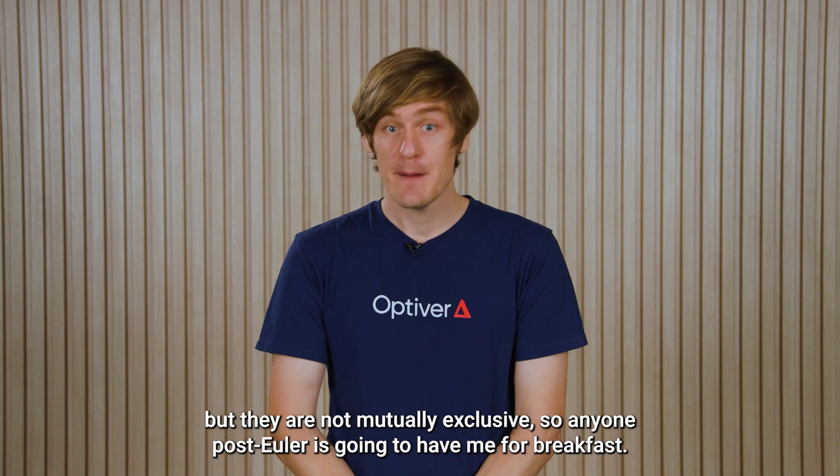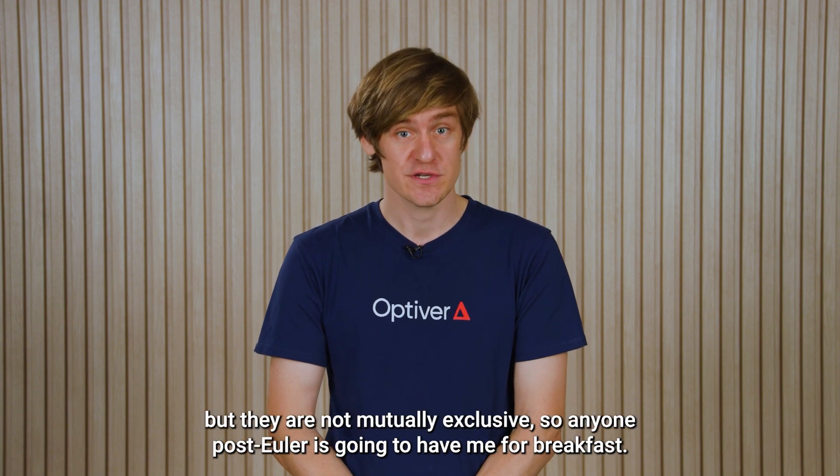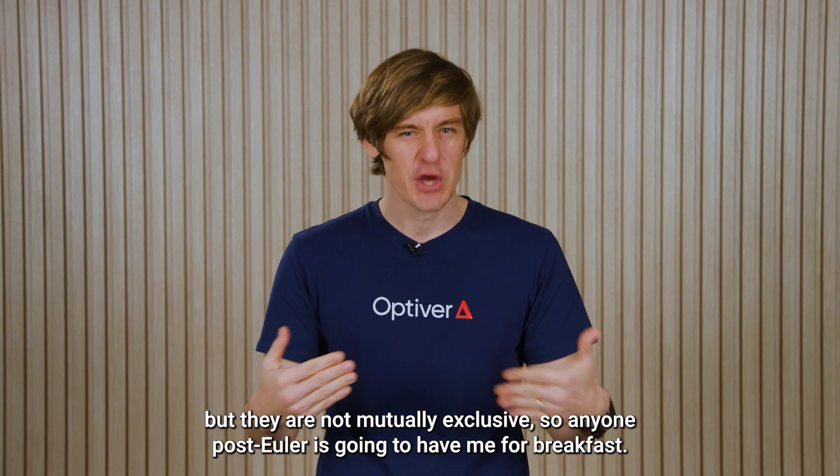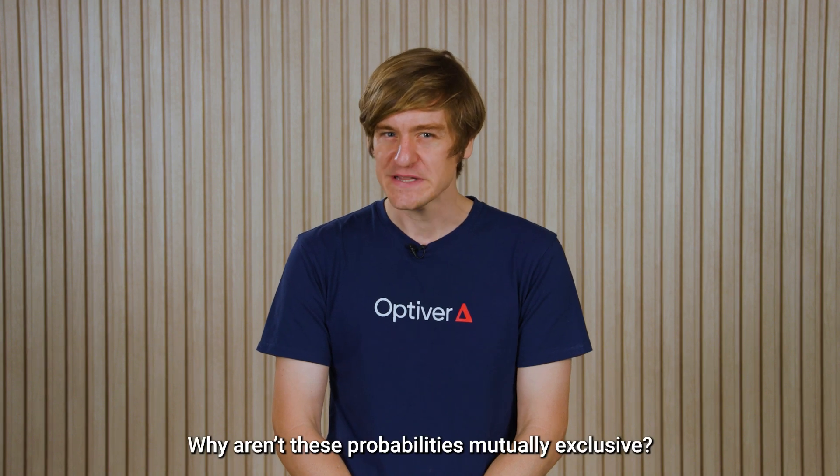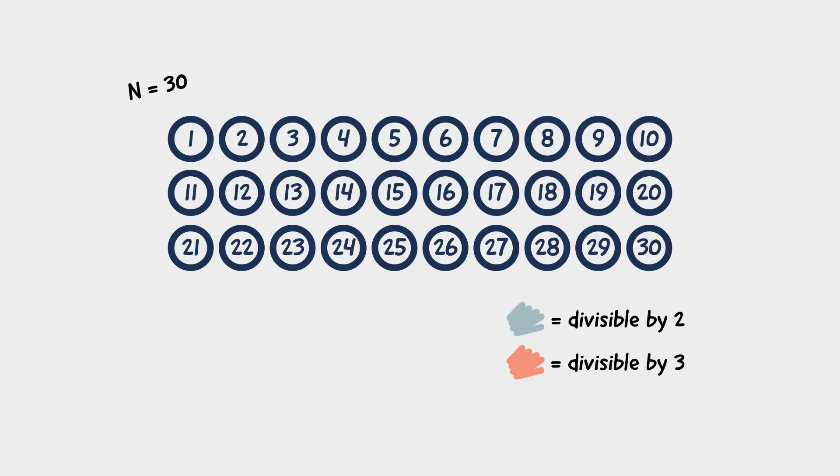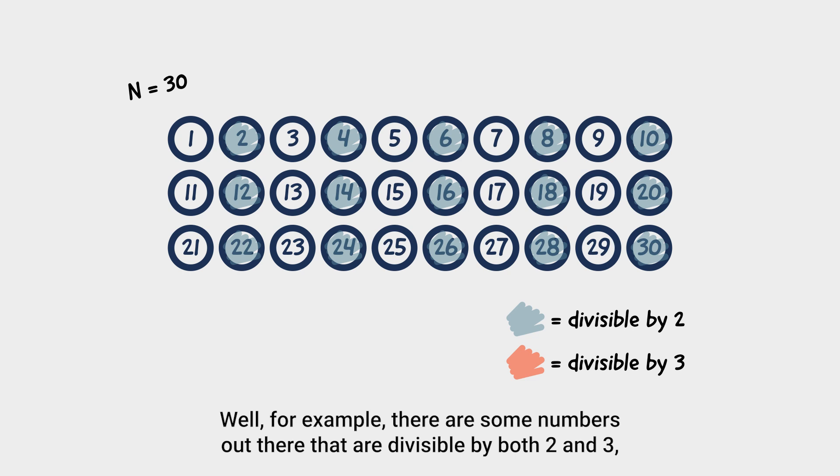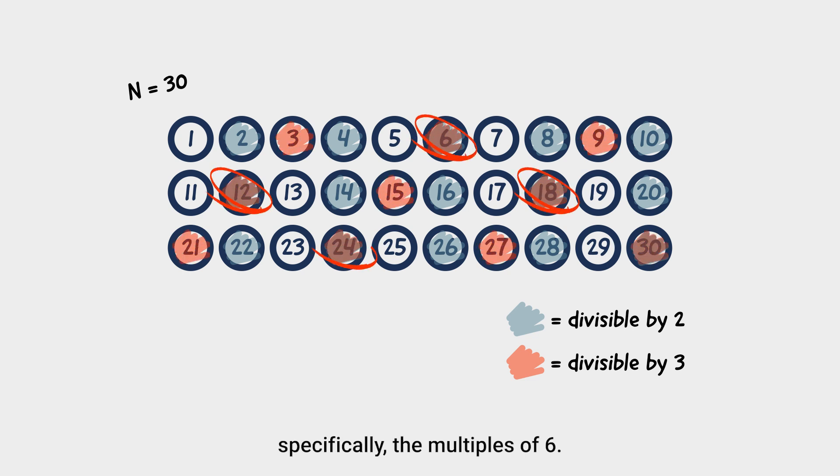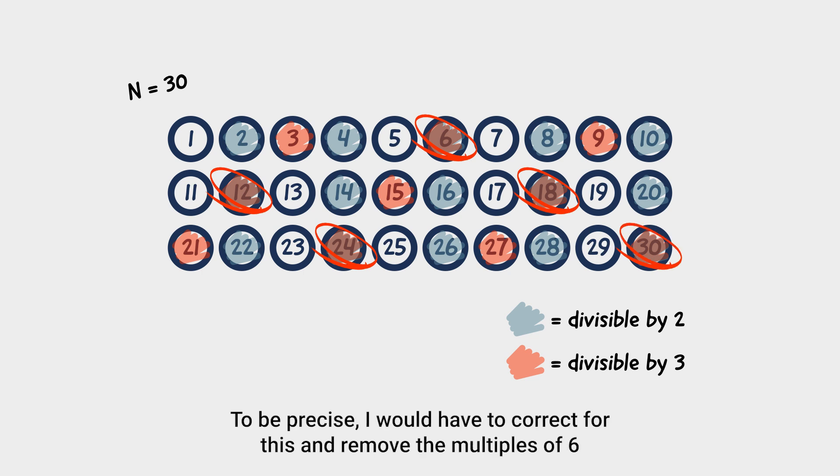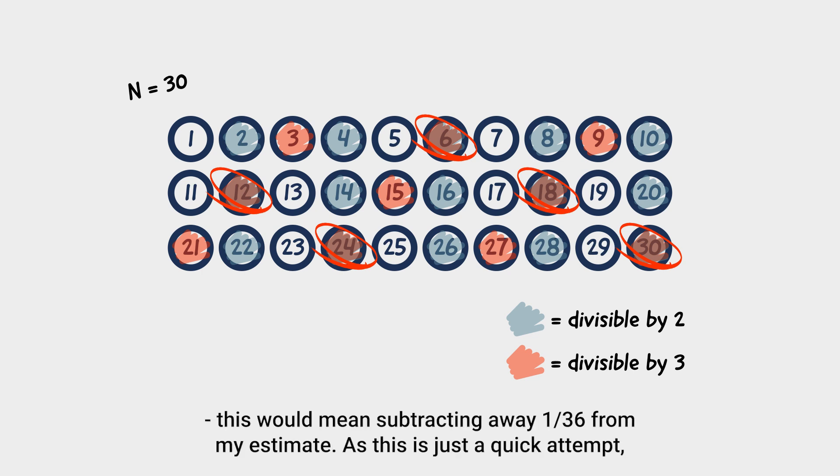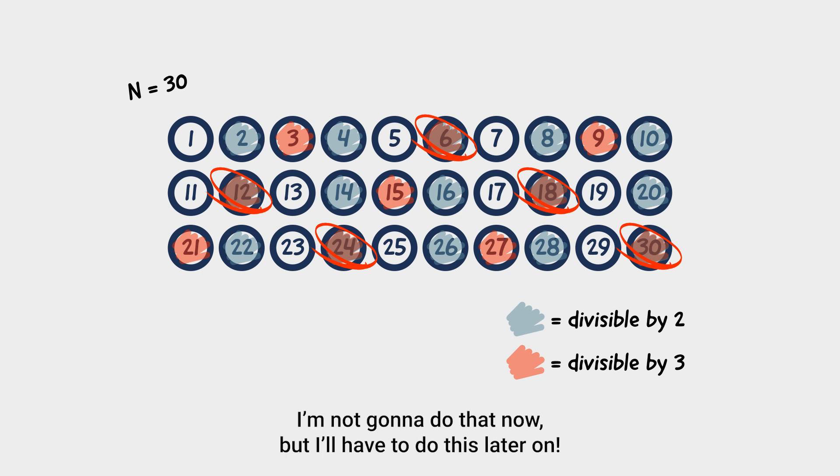I've added these probabilities together, but they are not mutually exclusive. So anyone post-Euler is going to have me for breakfast. Why aren't these probabilities mutually exclusive? Well, for example, there are some numbers out there that are divisible by both 2 and 3, specifically the multiples of 6. Basically, I've counted the multiples of 6 twice. To be precise, I would have to correct for this and remove the multiples of 6. This would mean subtracting away 1 on 36 from my estimate. As this is just a quick attempt, I'm not going to do that now, but I'll have to do it later on.